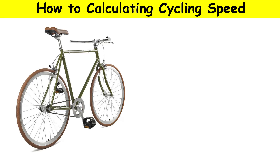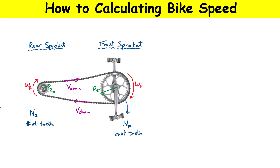We're going to start with our bicycle here, and what we're going to do is zoom in on the chain, the front chain ring, and the rear chain ring. We'll come back to the overall picture in just a second. Looking at the different pieces of our system: we have the pedals connected to this front sprocket here, and the front sprocket is going to rotate at some angular frequency that I'm going to call Omega F — F for the front. The radius of the front sprocket I've written as R_F.